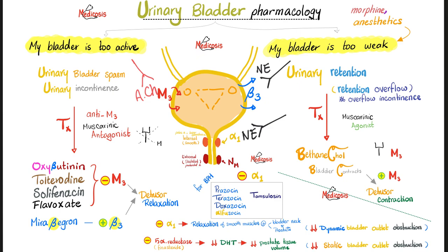Now let's take it to the clinic. If we have a patient who has urge incontinence where the bladder is too active, we're trying to inhibit the overactive bladder wall. We can use oxybutynin, tolterodine, solifenacin, and flavoxate. How do they work? They inhibit M3. If you inhibit M3, you inhibit the contraction of the bladder wall, so the bladder relaxes — this is called detrusor relaxation.